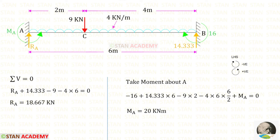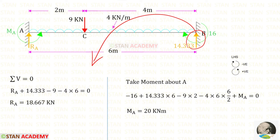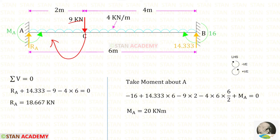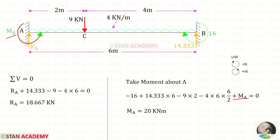Now let us take moments about A to find Ma, moving from point B following the left-hand side rule. Mb is negative (clockwise), Rb is positive with distance 6, the UDL is negative, the point load is also negative with distance 2, and Ma is assumed anti-clockwise so it is positive. After calculation, Ma gives a positive value, confirming that Ma is indeed acting in the anti-clockwise direction.